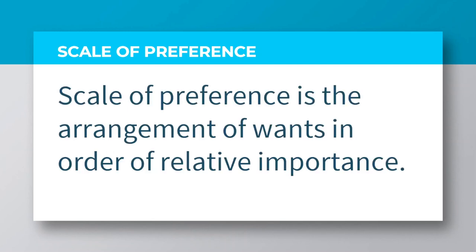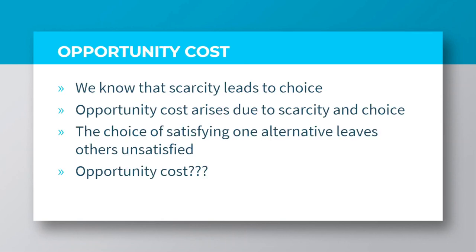Scale of preference is the arrangement of wants in order of relative importance. This allows people to know which wants to satisfy first, second, third and so on. We now know that scarcity leads to choice, and opportunity cost arises due to scarcity and choice.